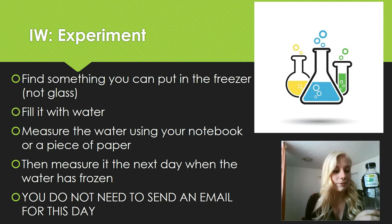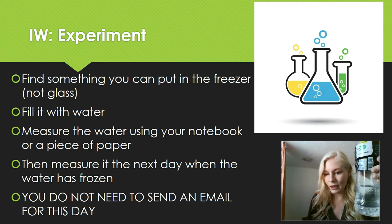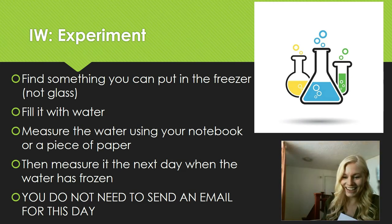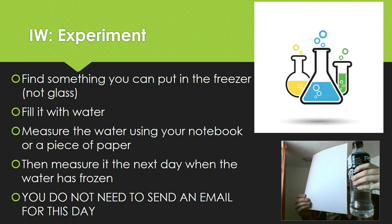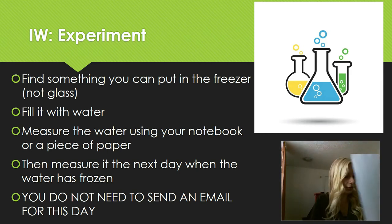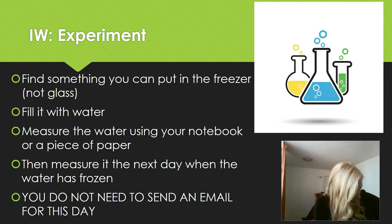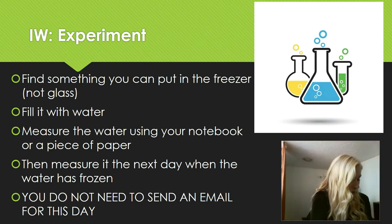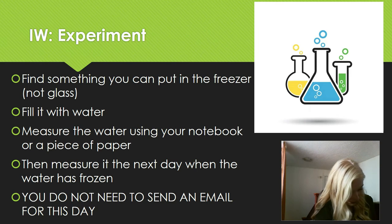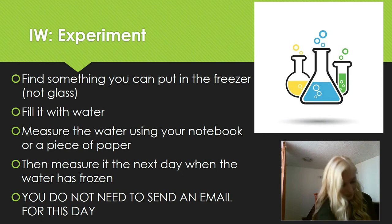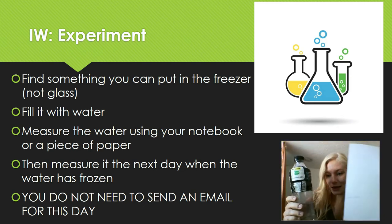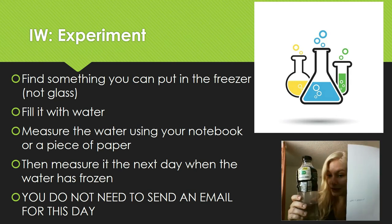Then you're going to measure it. I have my water right here. What I'm going to do is take either my notebook or a piece of paper and measure how high the water is. I'm going to put it right next to my bottle and draw a little line to show how high the water is. All I did was draw this little tiny line on my paper because this is how high the water is. I'm going to label it as 'water as a liquid.'